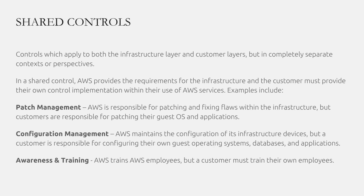There are some shared controls — controls that apply to both the infrastructure layer and the customer layer, but in completely separate contexts. For example, patch management: AWS is responsible for patching and fixing flaws within the infrastructure, while customers are responsible for patching the guest operating system and applications. Similarly, AWS trains their employees — for example, not to steal data from the data center — and customers on their side need to train their employees to do things like encrypt data on S3 buckets and keep objects private.